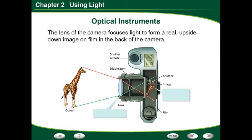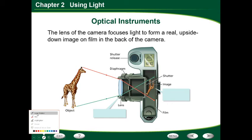The shutter is this little door that's going to flip open and flip close really fast just to let light in. The light is then going to go into the camera and hit the film on the back. If the shutter is left open for too long, you'll have blurry images. And if it's left open too little, you're going to have very hard to see images.